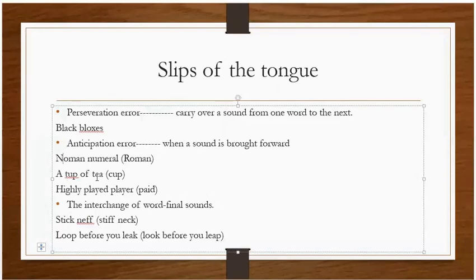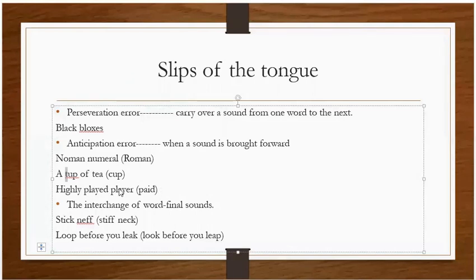For example, 'a top of t' — the 'to' sound was anticipated and placed earlier. 'Highly played player' instead of 'highly paid player' — the final sound was anticipated and placed on 'paid'. The interchange of final sounds can also occur, like 'stick left' instead of 'stick left', or 'loop before you leak' instead of 'look before you leave'.